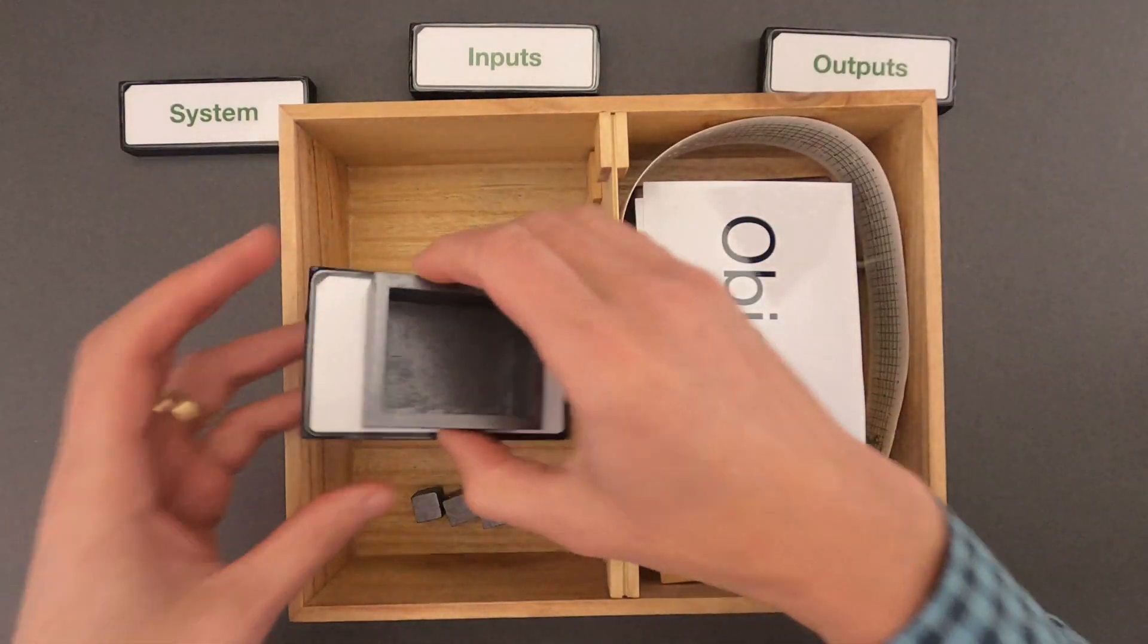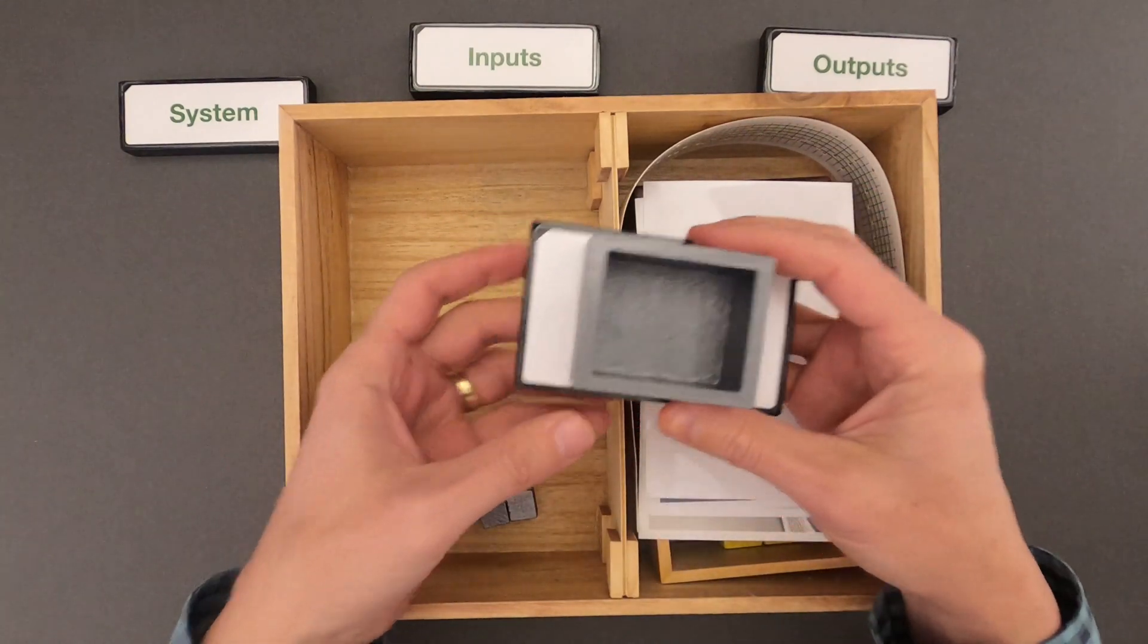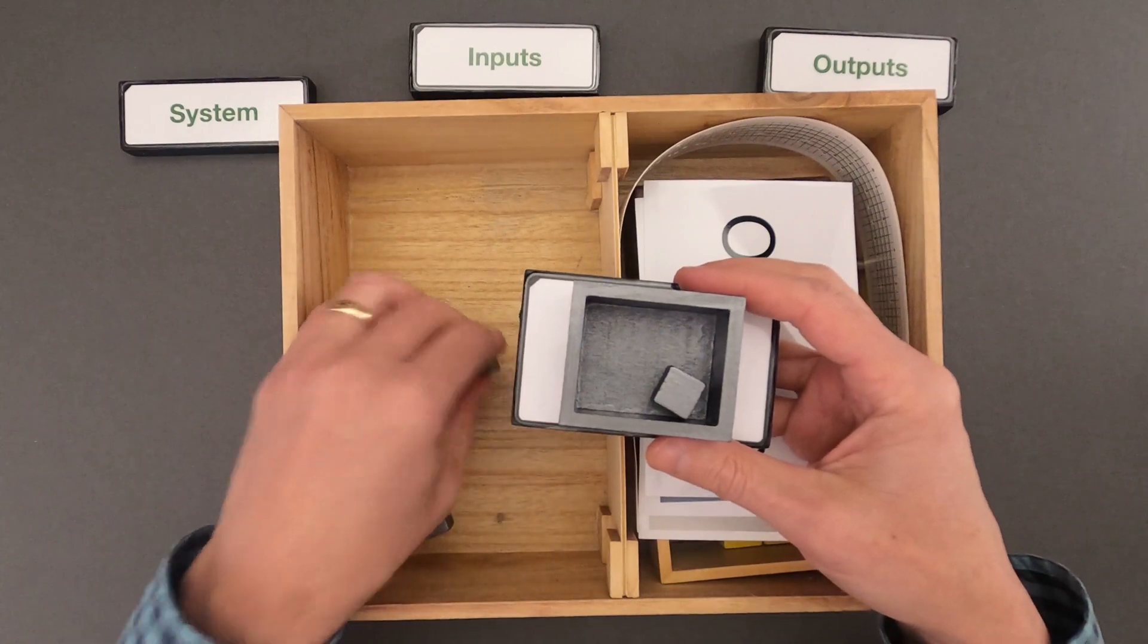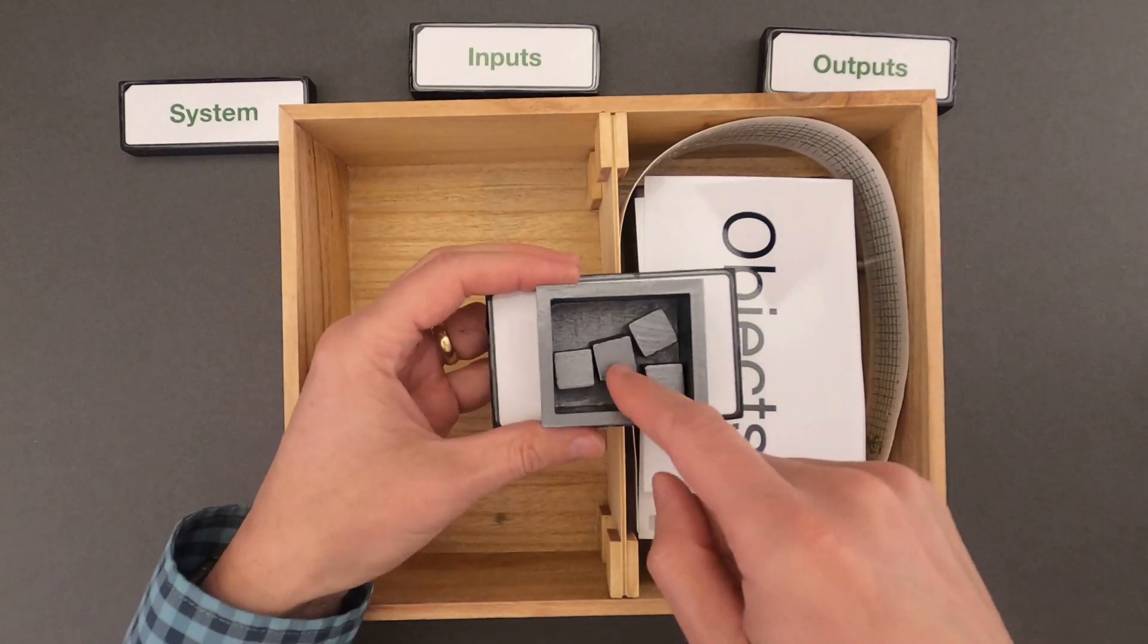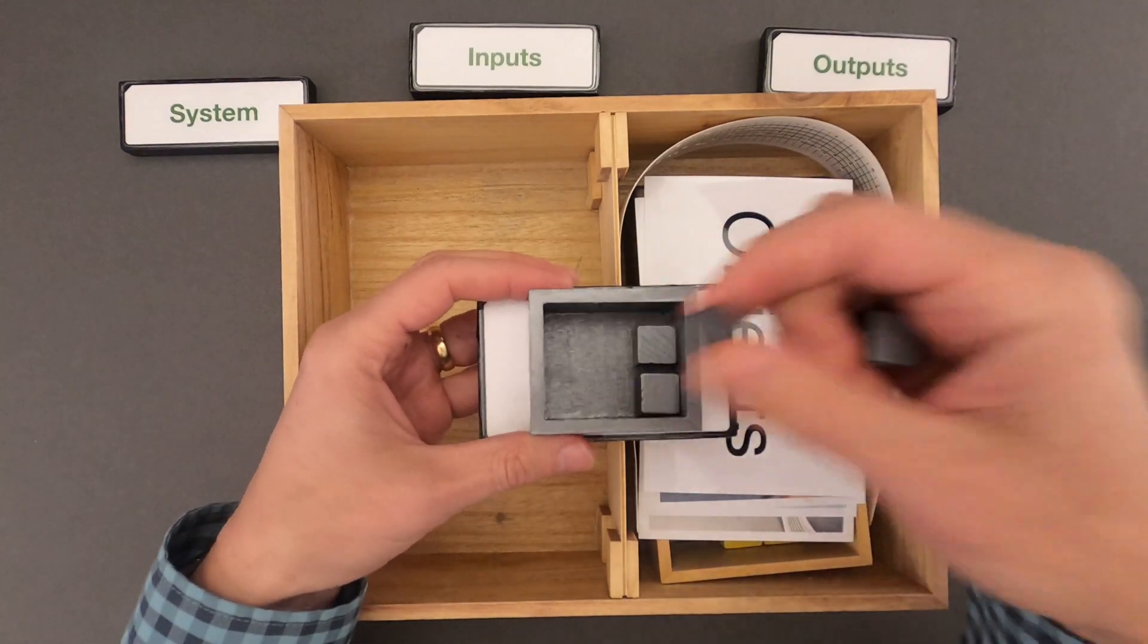The object that represents a system is always this gray container. Up to this point we've said this is the boundary of the system. In this video we're really going to talk about how things can move into a system, then what might happen to those components into the system, and then what might come out of the system. We call those outputs.